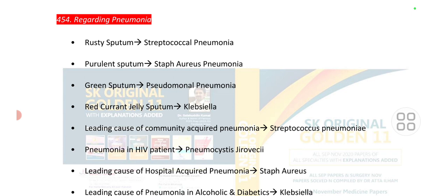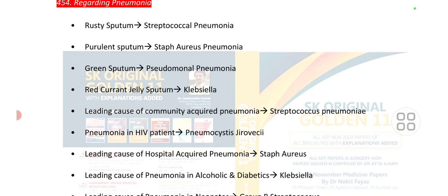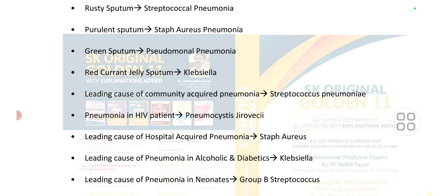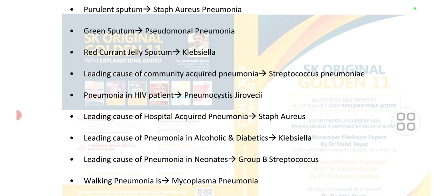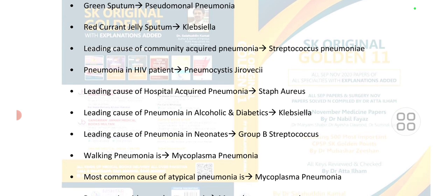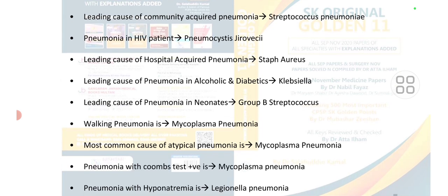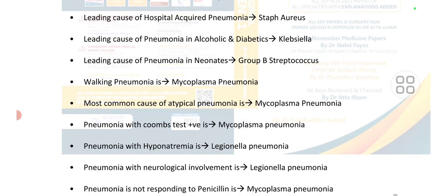Point number 454 is regarding pneumonia. Rusty sputum is a diagnostic feature of streptococcal pneumonia. Purulent sputum is a feature of Staphylococcus aureus pneumonia. Green sputum is a feature of Pseudomonas. Red currant jelly color sputum is a feature of Klebsiella. The leading cause of community-acquired pneumonia is Streptococcus pneumoniae. In HIV patients, it is Pneumocystis jirovecii. The leading cause of hospital-acquired pneumonia is Staphylococcus aureus. In alcoholics and diabetics, it is Klebsiella. In neonates, it is group B Streptococcus. Walking pneumonia is Mycoplasma pneumoniae.